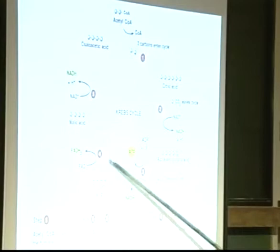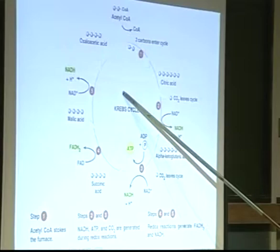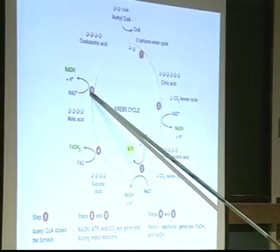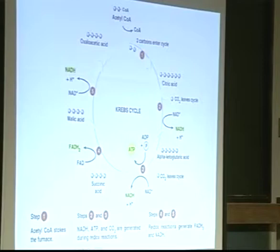Student question: how many NADHs does that work out to? Let's think about this: we've got half of our glucose here; the other half would come in and do another turn of the cycle. So all we have to do is double everything in here to see how much we get per glucose: two ATPs, six NADHs, and two FADH2s. Keep in mind, when you go through one turn of the Krebs cycle, you're looking at only half the glucose molecule that went through glycolysis.